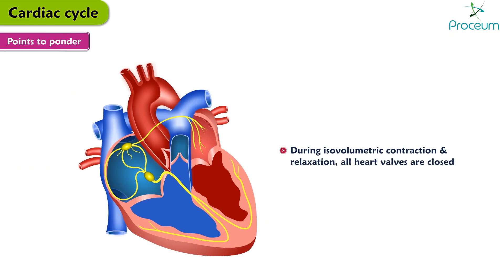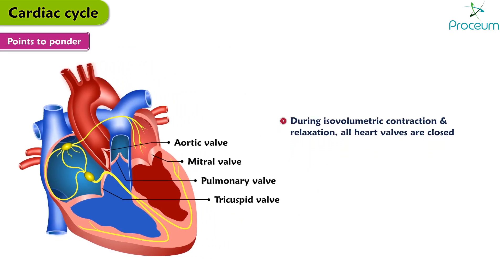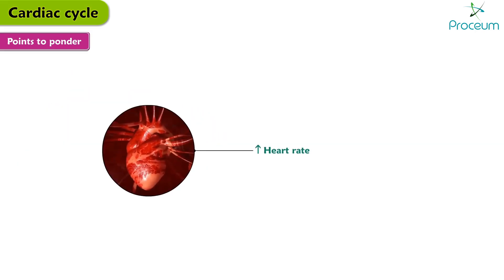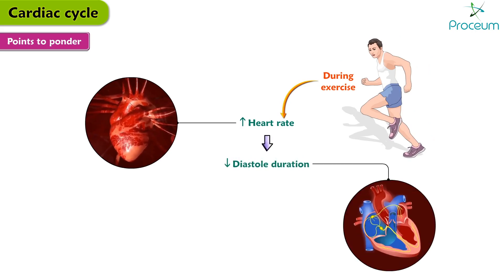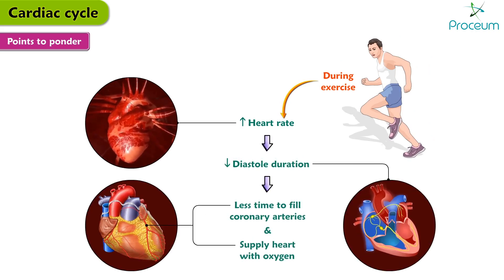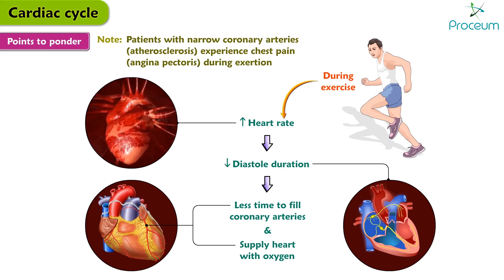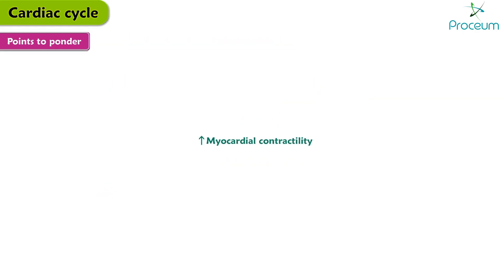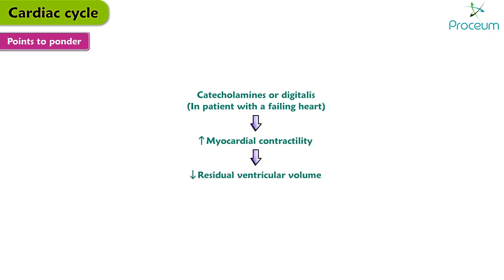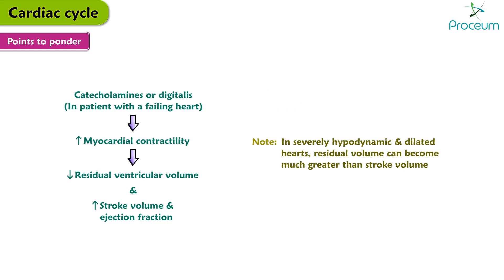Points to ponder. During isovolumetric contraction and relaxation, all heart valves are closed. There are no periods in which all heart valves are open. During states of increased heart rate like during exercise, the duration of diastole decreases, so there is less time for the coronary arteries to fill with blood and supply the heart with oxygen. Patients with narrow coronary arteries, such as in atherosclerosis, will therefore experience chest pain during exertion. An increase in myocardial contractility, as produced by catecholamines or by digitalis in a patient with a failing heart, may decrease residual ventricular volume and increase the stroke volume and ejection fraction. In severely hypodynamic and dilated hearts, residual volume can become much greater than the stroke volume.